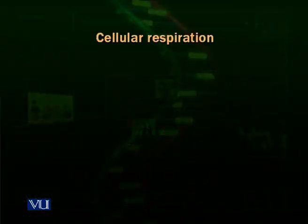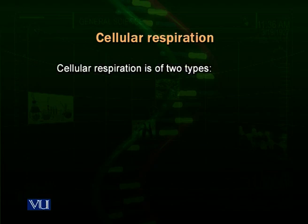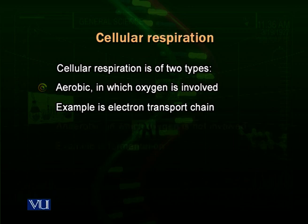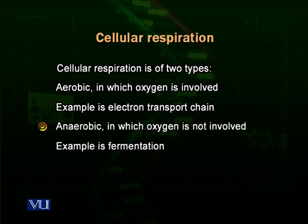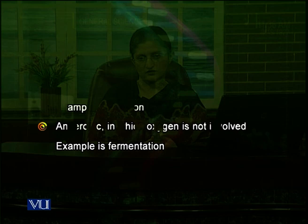Cellular respiration also consists of two types: aerobic respiration and anaerobic respiration. In aerobic respiration, oxygen is utilized and is required for the metabolic processes. While in anaerobic respiration, as the name says, oxygen is not required — these processes take place without the presence of oxygen. There are few organisms that conduct anaerobic respiration, mostly prokaryotes, for example bacteria.